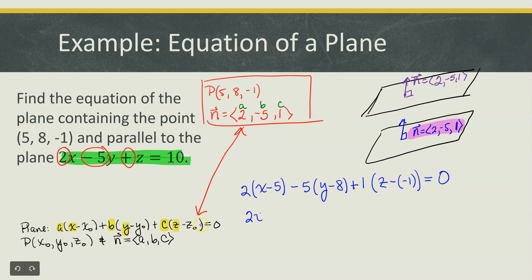So we've got 2 times the quantity x minus 5, minus 5 times the quantity y minus 8, plus z or 1 times the quantity z plus 1. If you wish you can go ahead and multiply that out and collect up like terms, but that's a perfectly good response to what is the equation of the plane.